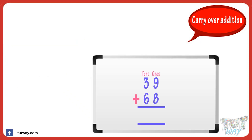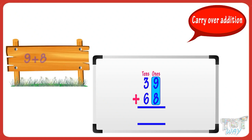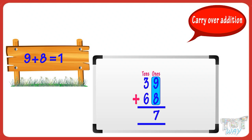First of all, we add the digits in the ones place. So add nine and eight. Adding nine and eight, we get seventeen. Now how to write seventeen — write the digit in the ones place, that is seven, below the ones place digits in the sum. And carry over the tens digit and write it above the tens digits.